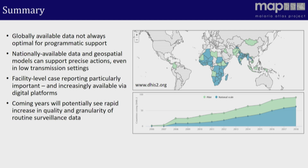In summary, the globally available data that we base our global maps on are not always optimal for programmatic support. Nationally available data, when coupled with geospatial models, can support precise planning, decision-making, and precise action even in low transmission settings. Of the new and emerging data sets available, by far the most important going forward will be facility-level case reporting. Increasingly it is available — surveillance systems are strengthening, and digital platforms like DHIS2 that facilitate data assimilation and dissemination are rapidly growing in uptake, with that map adding new countries all the time. We can confidently predict that the coming years will see a pretty rapid increase in the quality, availability, and granularity of routine surveillance data. It's beholden on us in this analytical community to have the tools to maximally exploit these emerging data sets as they come into existence.